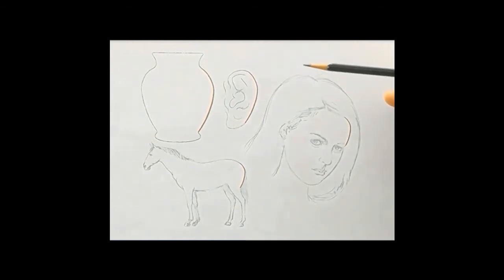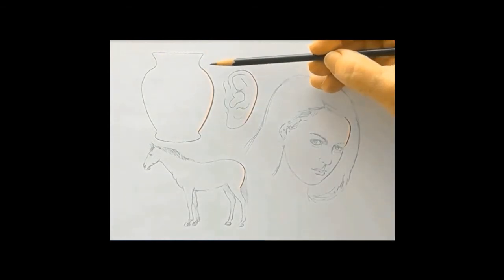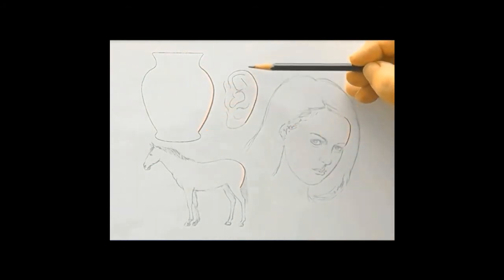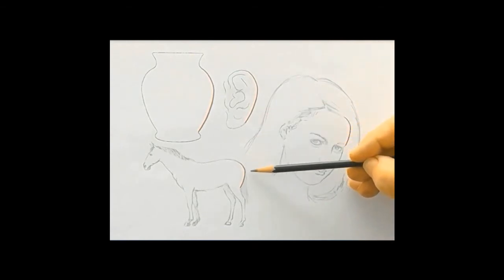Look here. The same curve that shapes the side of the vase also works at varying sizes for the ear, the horse's rump, and the girl's forehead.